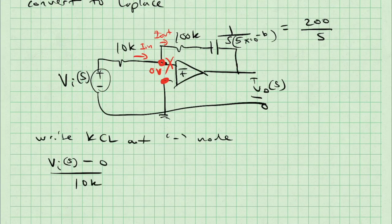Let's start with the expression for current in. That is, the voltage drop across the 10K resistor divided by that 10K resistor. So that's VI of S minus zero over 10K.